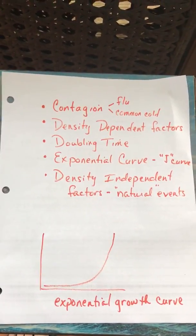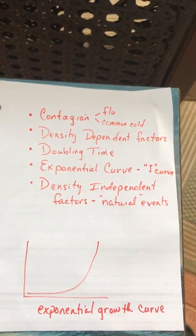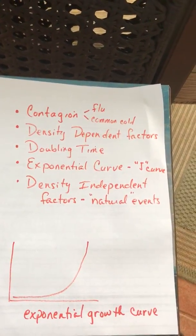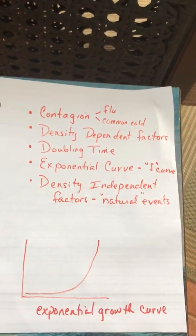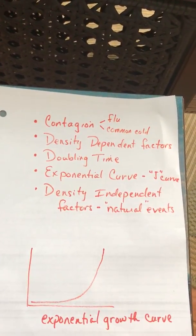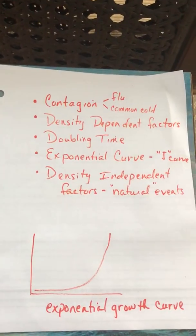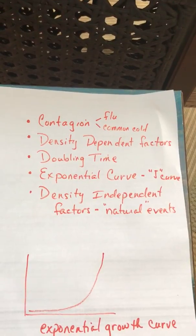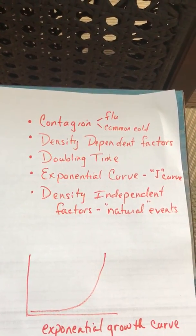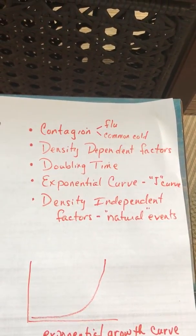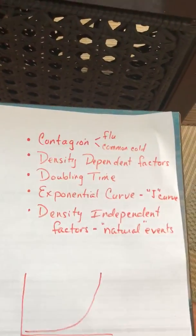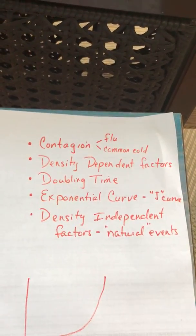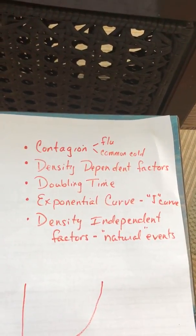The last concept is density-independent factors. Those factors have nothing to do with how closely packed people are. A lot of times those are natural events like floods, mudslides, wildfires, and tornadoes. I always think of them as the equal opportunity destroyers — it doesn't matter whether you're rich or poor. If a tornado comes, it's going to knock down each of those houses, whether it's a beautiful mansion or a single-wide mobile home. Both will be equally affected. So those would be density-independent factors.